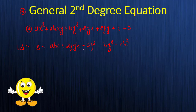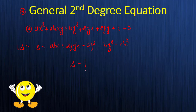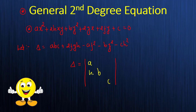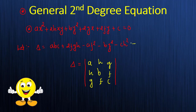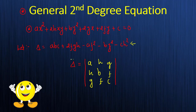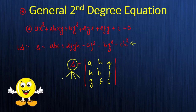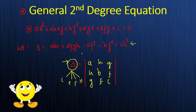Delta equals abc + 2fgh − af² − bg² − ch². Don't try to mug up this equation because if you map it in determinant form it is very simple. The determinant is a 3×3 matrix with entries a, h, g in the first row; h, b, f in the second row; and g, f, c in the third row. If you expand this determinant you will get the delta equation. Depending on the value of delta, we can identify all types of conics.